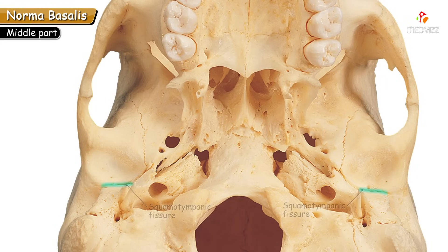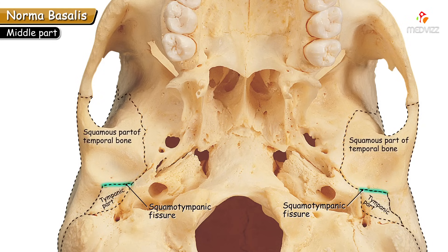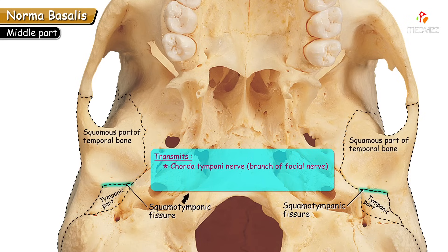The squamo-tympanic fissure is a long gap between the squamous part and the tympanic part of the temporal bone. It transmits the chorda tympani nerve (a branch of the facial nerve), the anterior tympanic artery, and the anterior ligament of the malleus. These three structures pass through the petro-tympanic fissure.